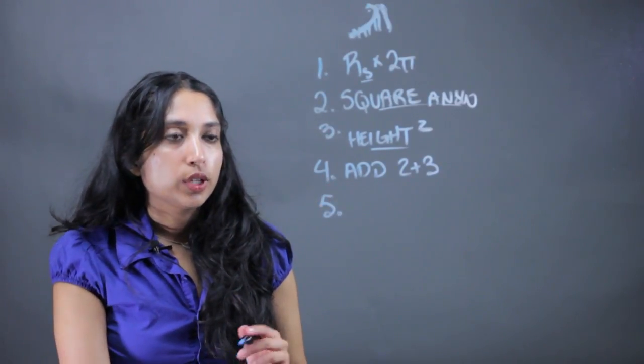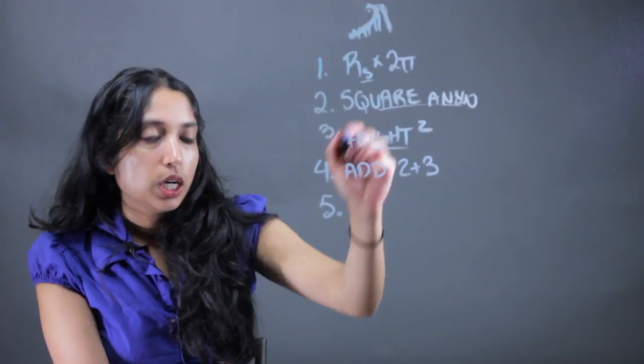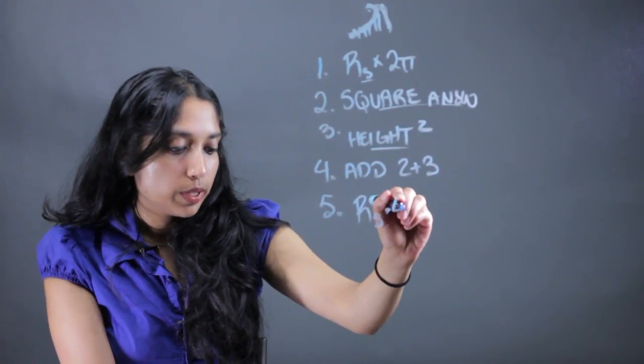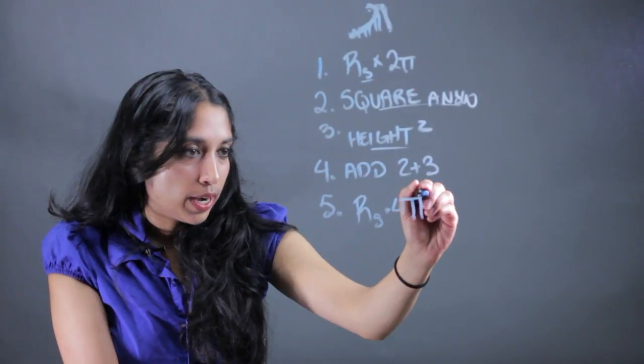Fifth thing we're going to do is we're going to take that radius again, multiply that by 4π².